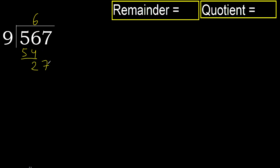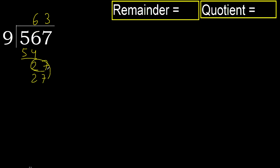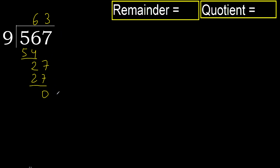Next: 27. 9 multiplied by 3 is 27, which is not greater. Subtract: 27 minus 27 equals 0. Next, there is no more number, therefore finish.